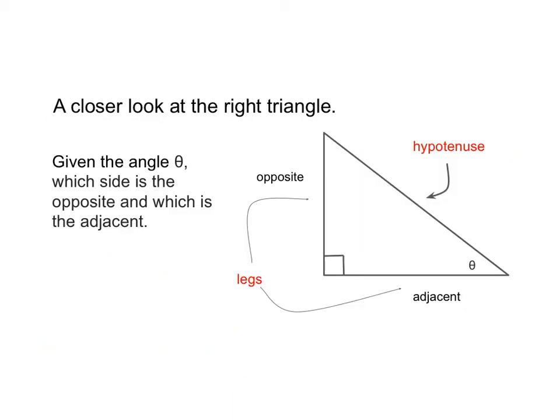In order to do that, what we do is we have to identify a reference angle. In other words, the angle where we're starting from. That usually will be using the letter theta, or we could have an X there or just angle 1 or it could just be marked. But somehow an angle will be marked. From that angle, we have to be able to identify the different parts of the triangle.